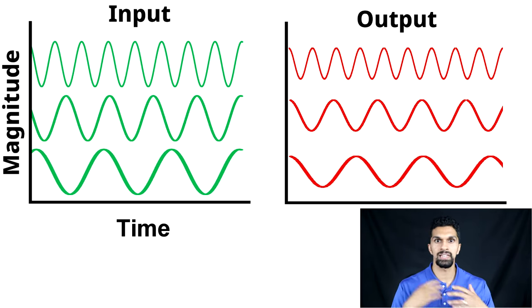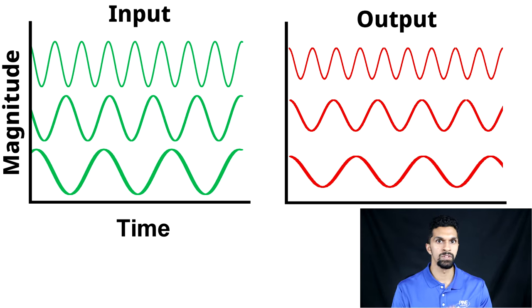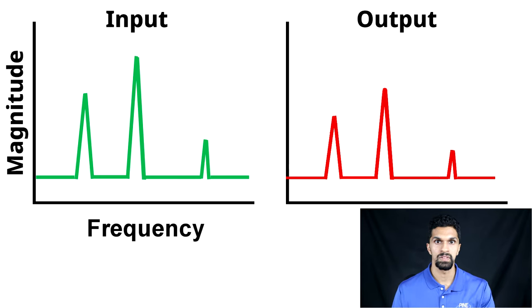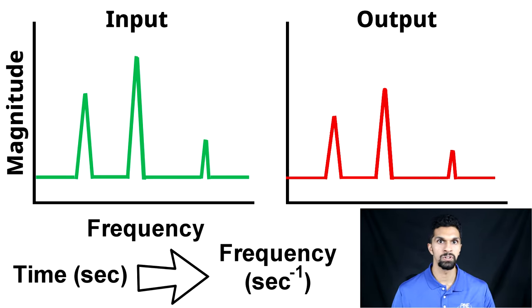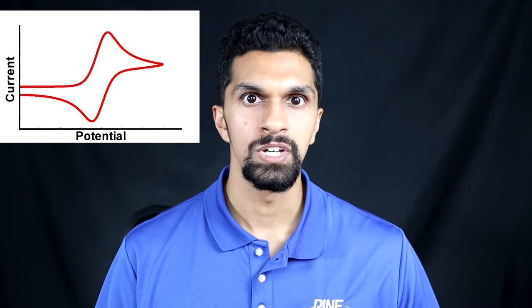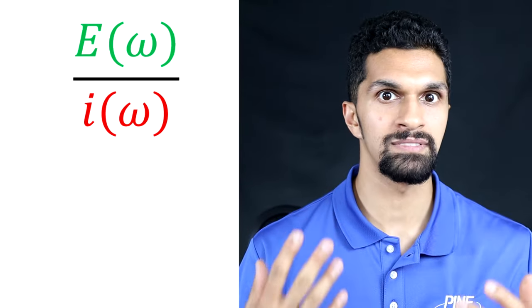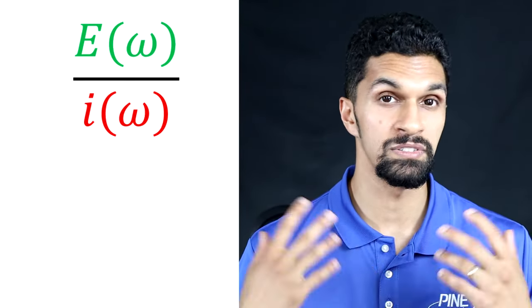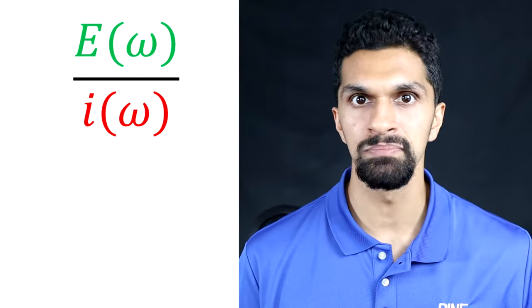Once we have all of our input and output signals, we then take a Fourier transform of the data. This will convert all of our time data — moving from the time domain into the frequency domain — so we're going from time in seconds to the inverse, which is inverse seconds, or hertz. Rather than simply plotting the current and the potential as we would in a DC voltammetry experiment, we instead calculate the ratio of the frequency-dependent potential over the frequency-dependent current in order to calculate the impedance.